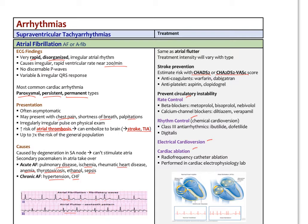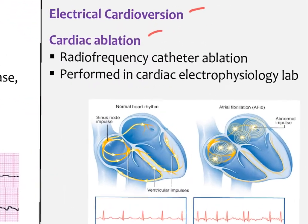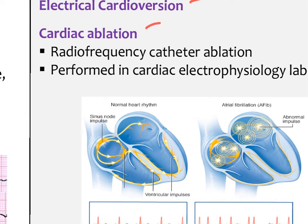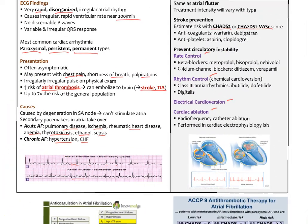With AFib, the SA node goes offline and we get all these ectopic pacemakers firing on their own, so the atria are just quivering in place, blood pools there, and the risk of thrombosis increases. That is atrial fibrillation — very common. If you feel a rapid but irregular pulse, especially in an older patient, particularly if they're symptomatic with lightheadedness or syncope, they need a referral for ECG workup to rule out AFib or another potentially dangerous arrhythmia.